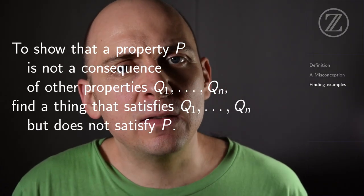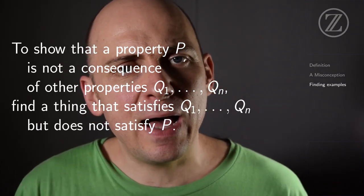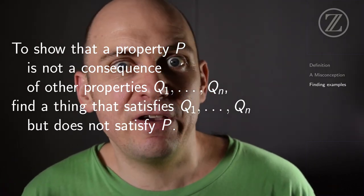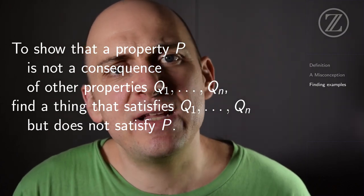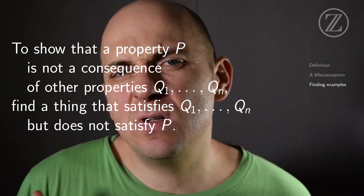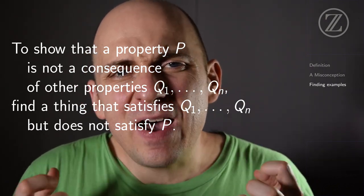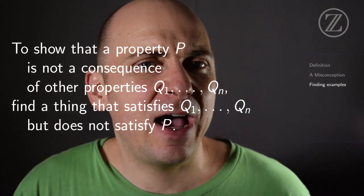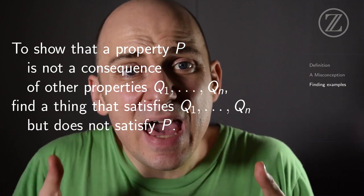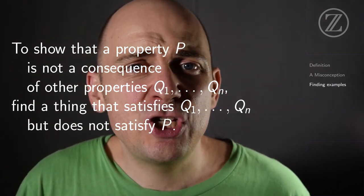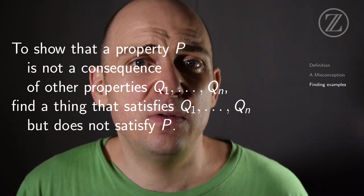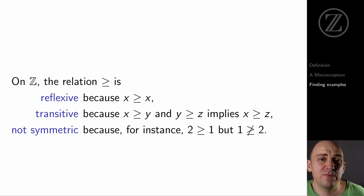We'll come back to this false proof in a little bit, but I'd like us to spend a little while thinking about how we can show it's impossible to prove something from something else. All right, let's suppose that we want to show that it's impossible to prove p just using the properties q1, q2, and so on, qn.